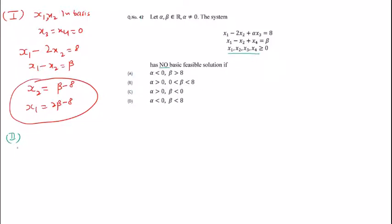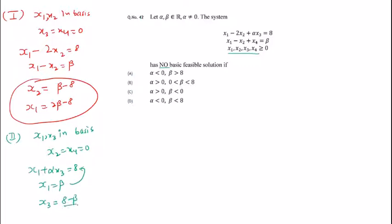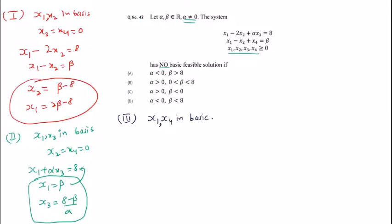For the second basic solution, I put x1 and x3 in the basis and set x2 and x4 equal to zero. This gives x1 + alpha*x3 = 8 and x1 = beta. From x1 = beta, we get x3 = (8 - beta) / alpha. Alpha appears in the denominator, which is why the question specifies alpha must be non-zero. Still, we cannot determine feasibility from this alone.